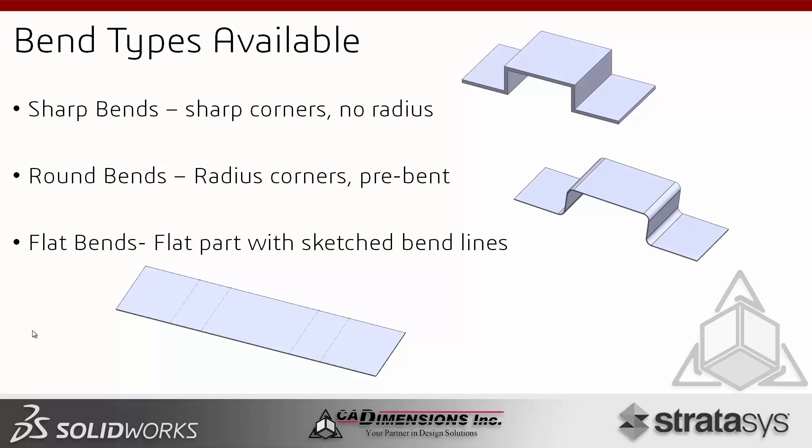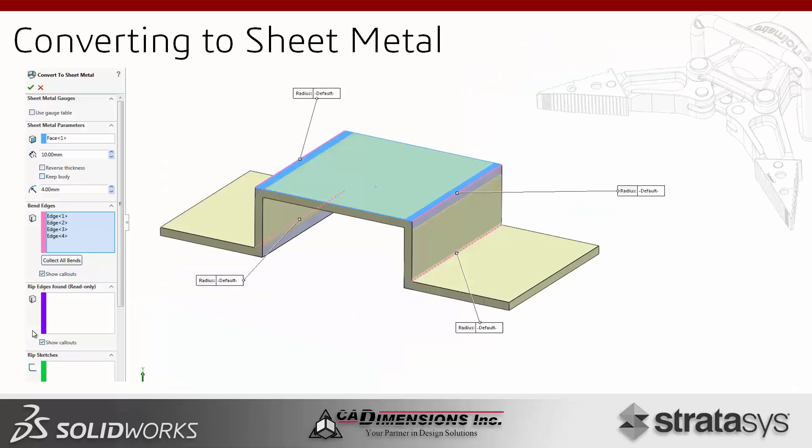Round bends are what you would import or what would already be a sheet metal component — that's actually the easiest thing to convert. Then we have flat bends, which is basically a blank with all of our sketch bends or bend lines on it, and we can use those lines to then bend it up.